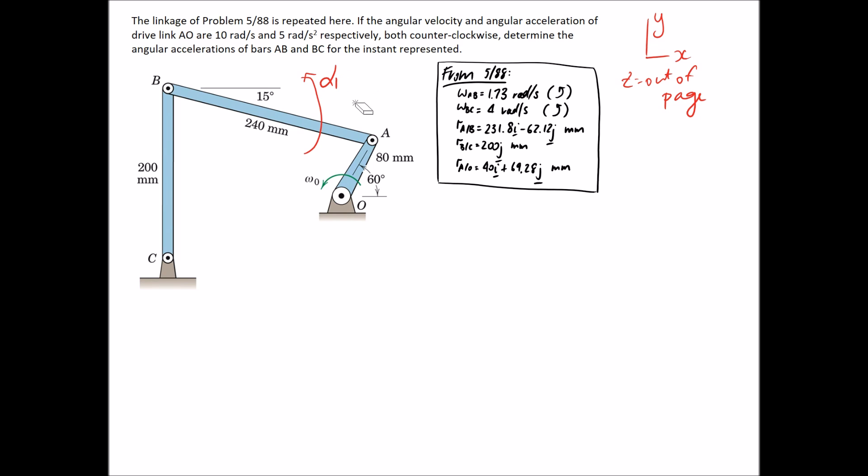If they come out negative, then we know they're the other way. So this is going to be alpha AB that we're trying to determine, and this is alpha BC, again what we're trying to determine.